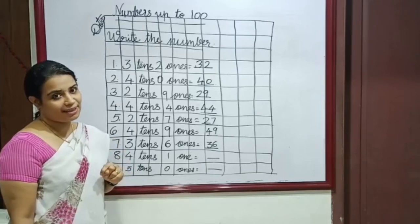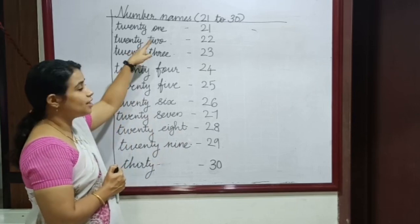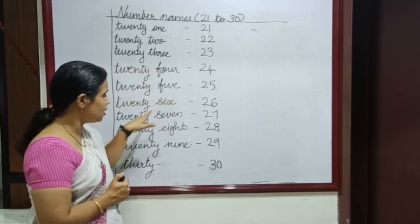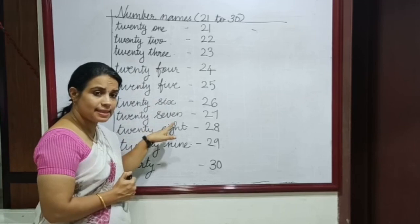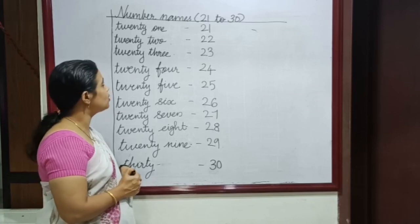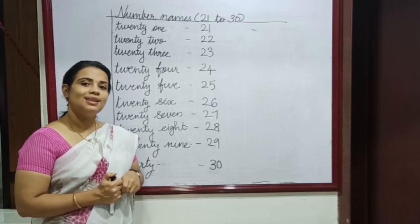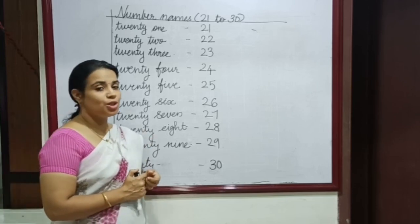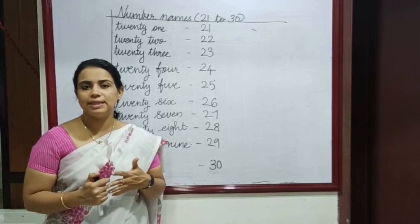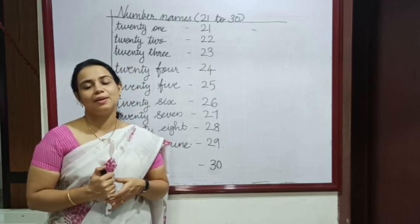Here are the number names from 21 to 30. 21, 22, 23, 24, 25, 26, 27, 28, 29, 30. Please spell 20: T, W, E, N, T, Y. 20, 21, 22, 23, 24, 25, 26, 27, 28, 29, 30. Please spell 30.